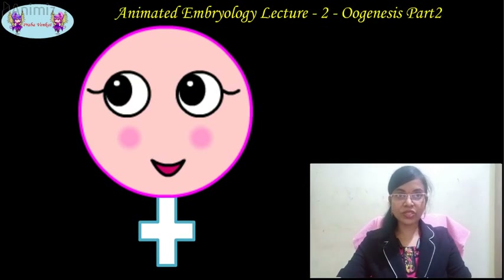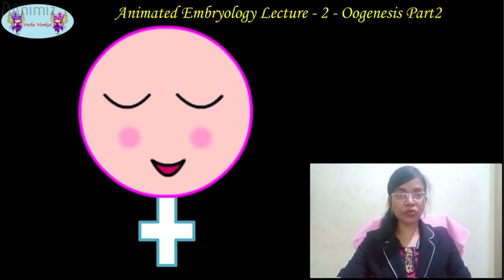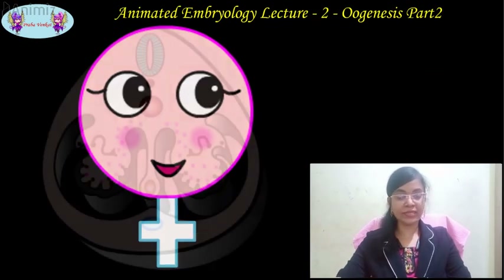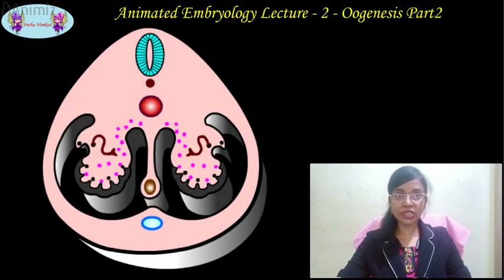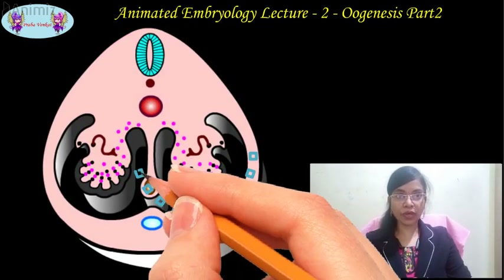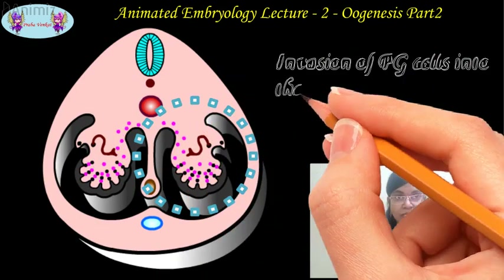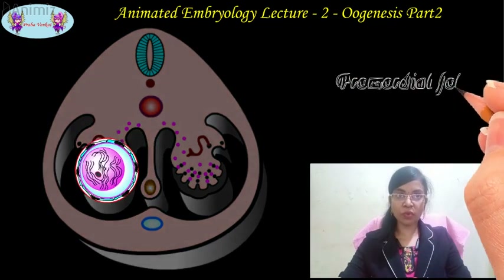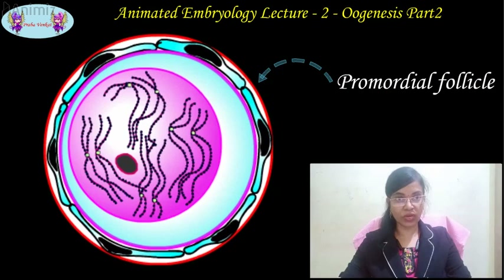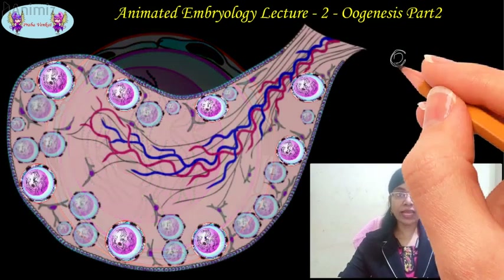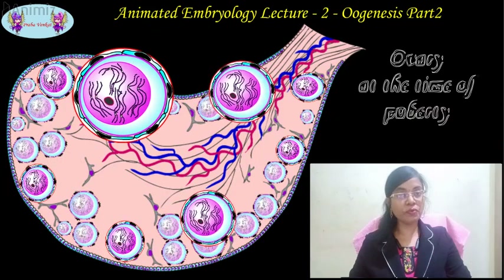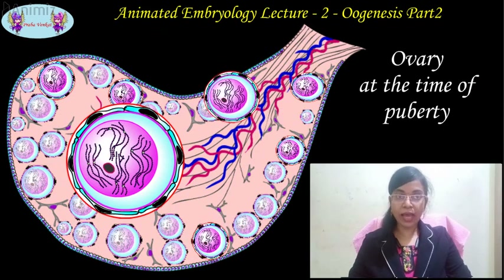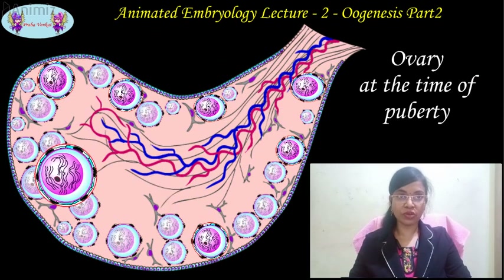Good day all. In this session we are going to discuss about oogenesis part 2 in the animated background. In the last session we have seen the initial stages of oogenesis, starting from the invasion of the primordial germ cells into the indifferent gonads by the sixth week of intrauterine life, to the formation of the primordial follicles. At the time of puberty, a pool of around 15 to 20 primordial follicles begin to grow under hormonal control and they enter into the phase of folliculogenesis.